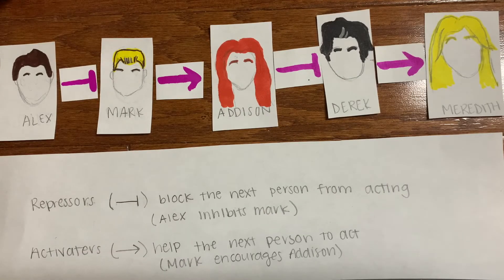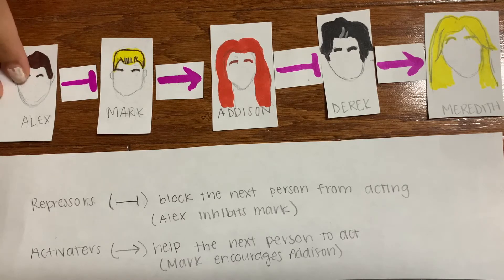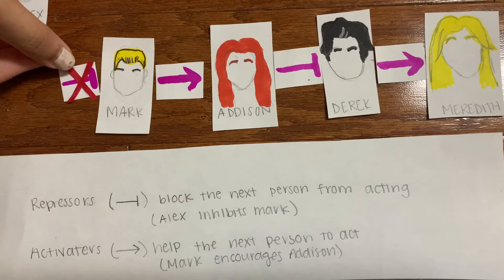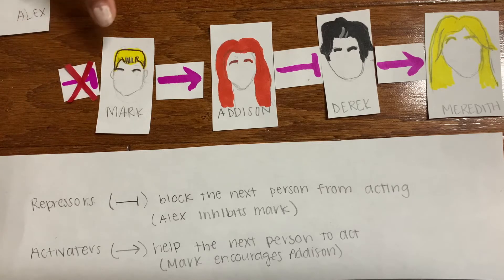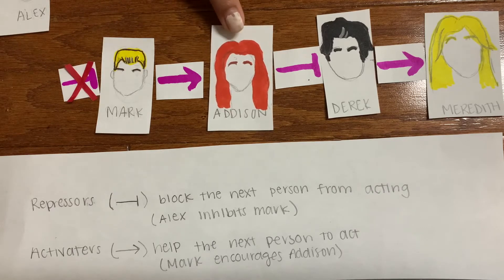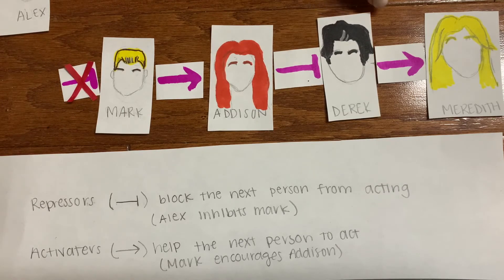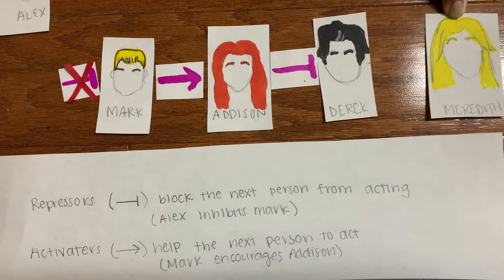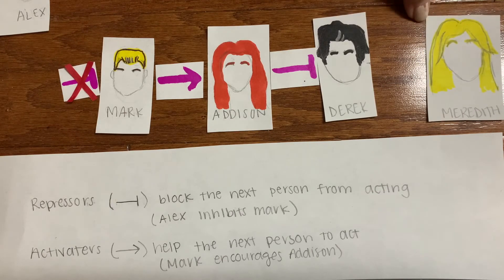Say that we have a single mutation that makes the Alex gene not be able to be transcribed. He can then no longer inhibit Mark. Mark will be able to activate Addison, who can then inhibit the Derrick gene product, and Derrick will not be able to activate the Meredith gene product. Therefore, the Meredith gene product will not be transcribed.